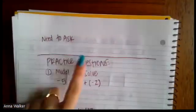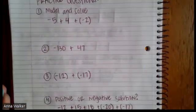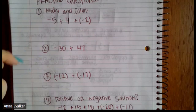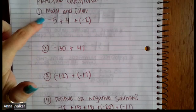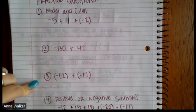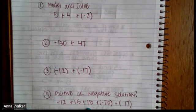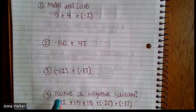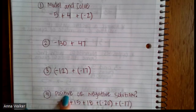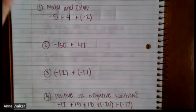Those of you who have finished taking notes, here are your practice questions. There are four today. First, model and solve negative five plus four plus negative two. Then try solving negative 130 plus 47. Then try negative 12 plus negative 17. Finally, for negative 12 plus 15 plus 18 plus negative 20 plus negative 17, determine if the answer should be positive or negative — that's all I need, though you can solve it fully if you'd like. Make sure you check your problems in the table of contents when done.